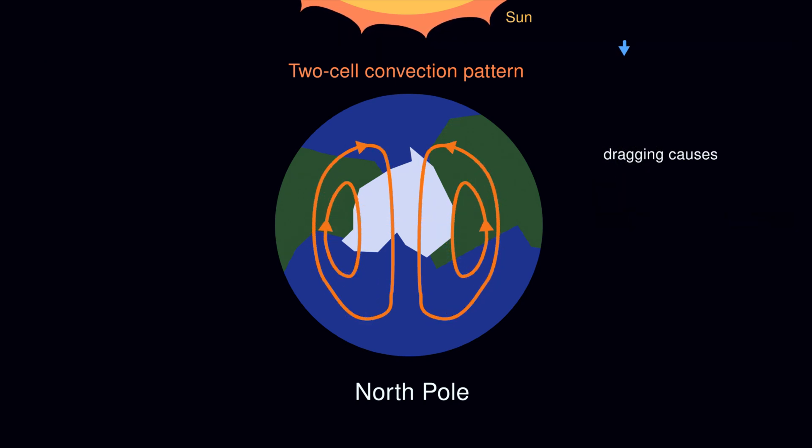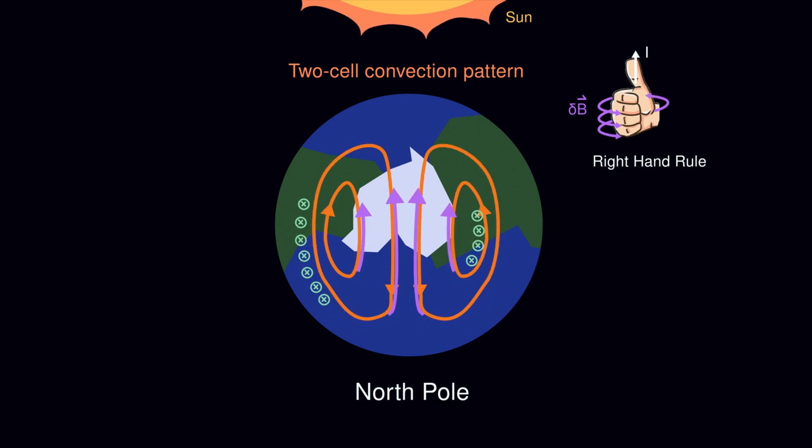The dragging of the field line by the solar wind makes Earth's dipole field bend back a bit, generating the horizontal magnetic field component pointing in the opposite direction of the flow. Through the law of electromagnetism, these horizontal magnetic fields will generate downward currents and also the upward currents around the convection cell.